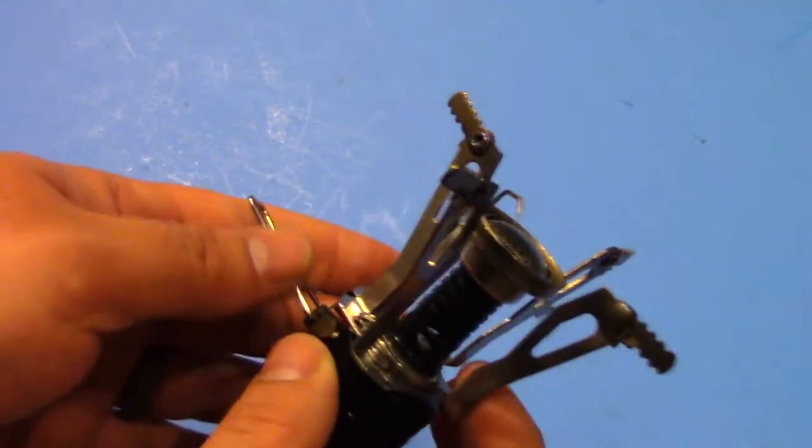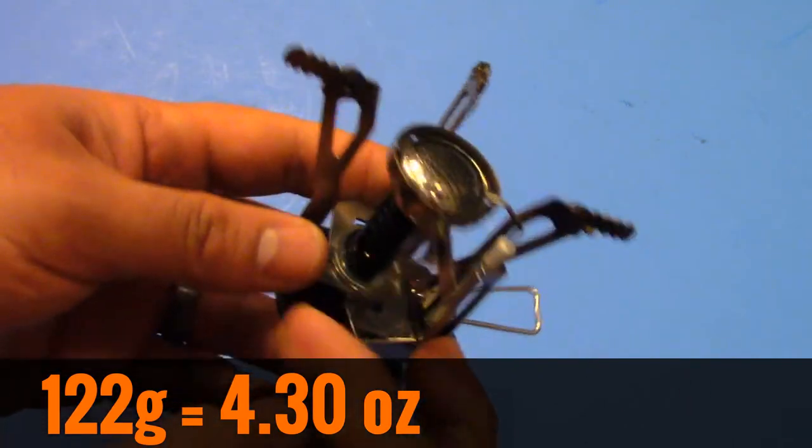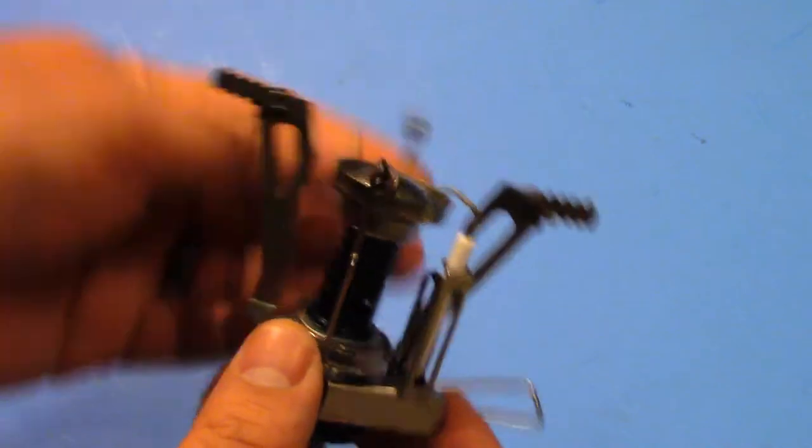Overall weight, it is 122 grams, that is 4.3 ounces. So that bad boy is light, 4.3 ounces.